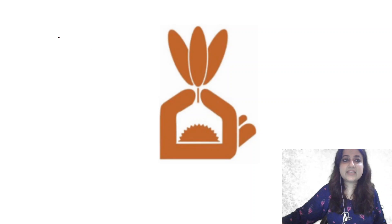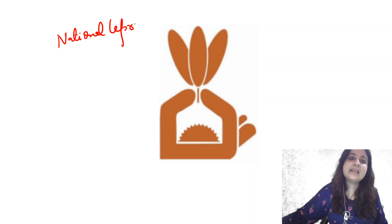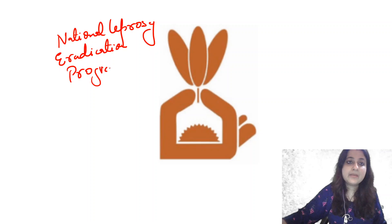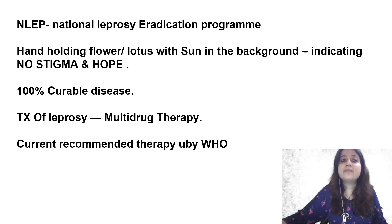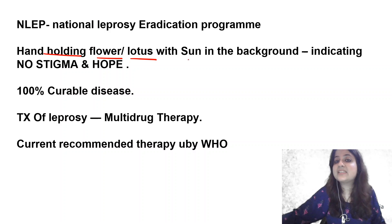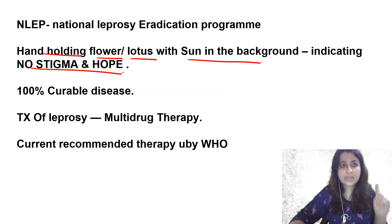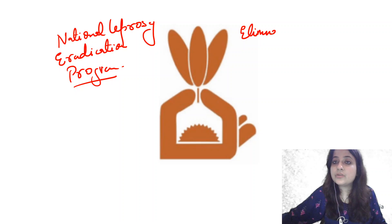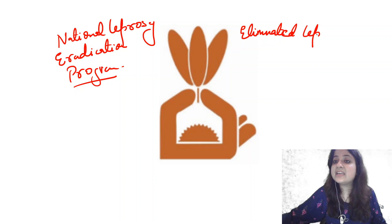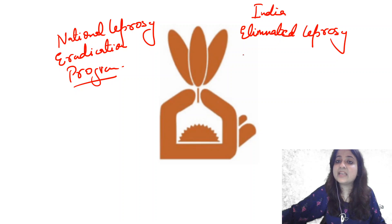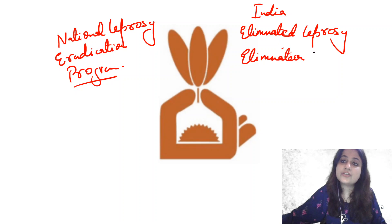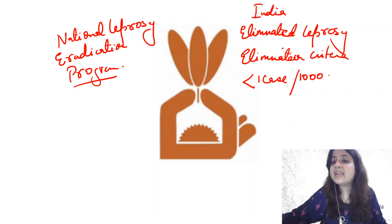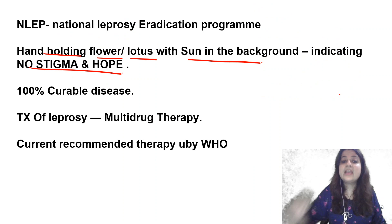Now moving from TB to leprosy. This logo is the National Leprosy Eradication Programme — note it is eradication, not elimination. The symbol shows a hand holding a lotus flower with the sun in the background, indicating no stigma and hope. India has eliminated leprosy. The elimination criteria for leprosy is less than 1 case per 10,000 population, which India has already achieved.